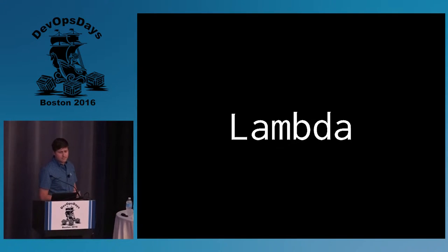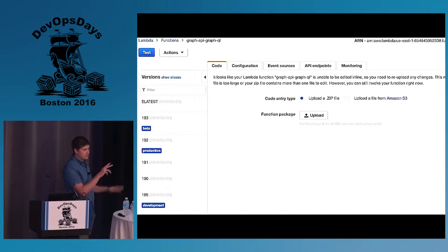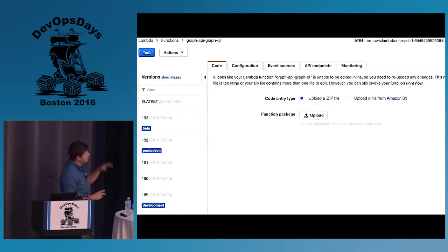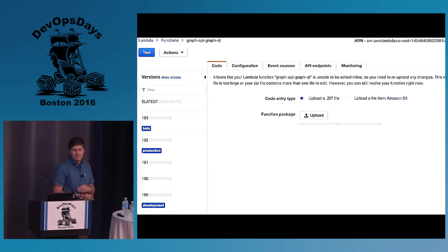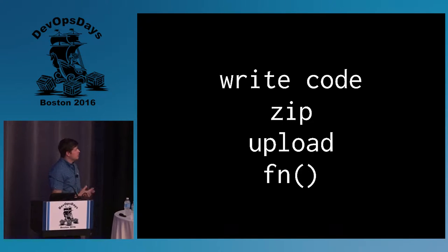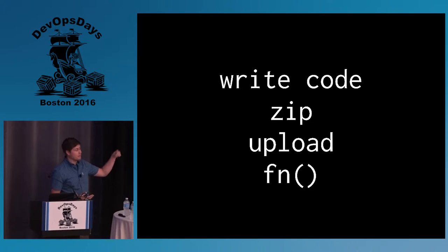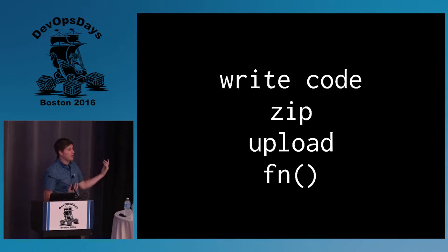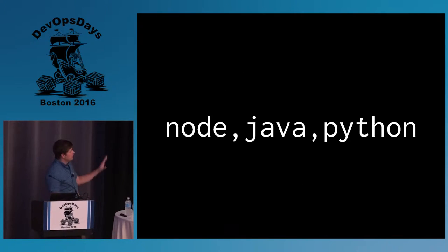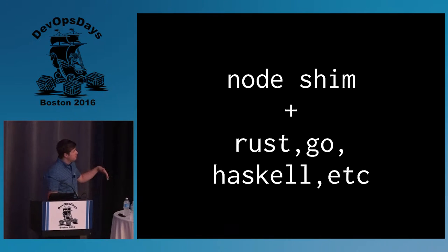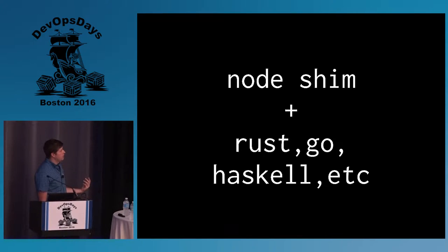Lambda is the functions-as-a-service part. This is a screenshot of what the Lambda UI console looks like — if you see this, you're in the right place. It's a very simple model: you write some code, you zip it, you upload it, and you can upload it right through the UI and click test and it'll just run that code. First-class support for Node, Java, and Python. With a Node shim you can also run any compiled language — there are people doing cool stuff with Go and Haskell on AWS Lambda, though there's a little overhead there.